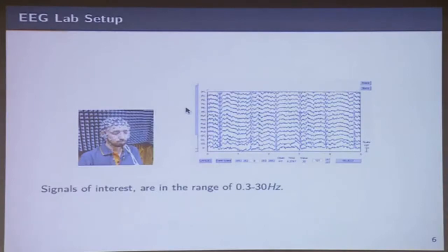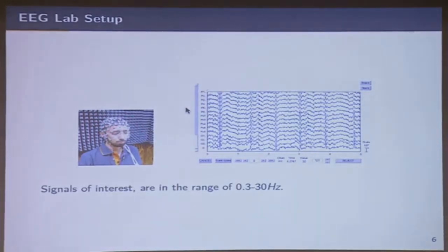Let me show you the picture of the lab we have. There's an EEG net — you place the net; each one of these is a microphone. The net is normally soaked in saline water — it's actually wet EEG — and it takes about 15 minutes to set up a person to use this. You soak the net in saline water and place the helmet on the head.